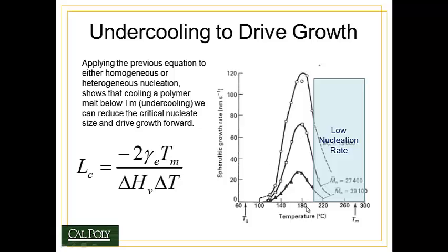As I get to lower temperatures, the spherulitic growth rate increases dramatically, and I have my peak in spherulitic growth. The reason for this is that I have a significant undercooling of the material below the melting point, and I have high levels of thermal energy to allow for movement of the polymer chains.